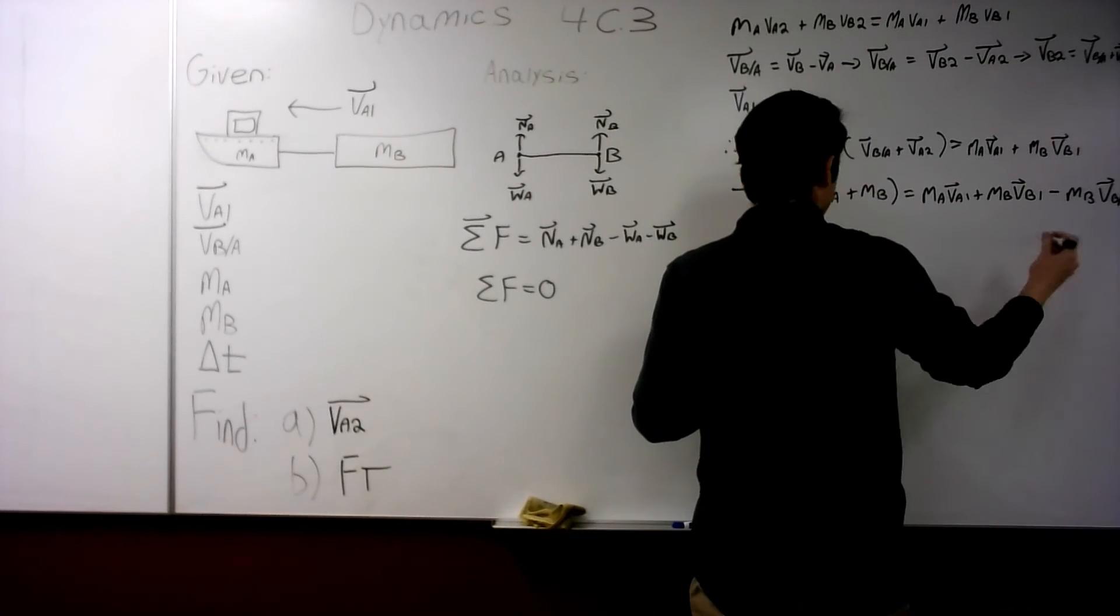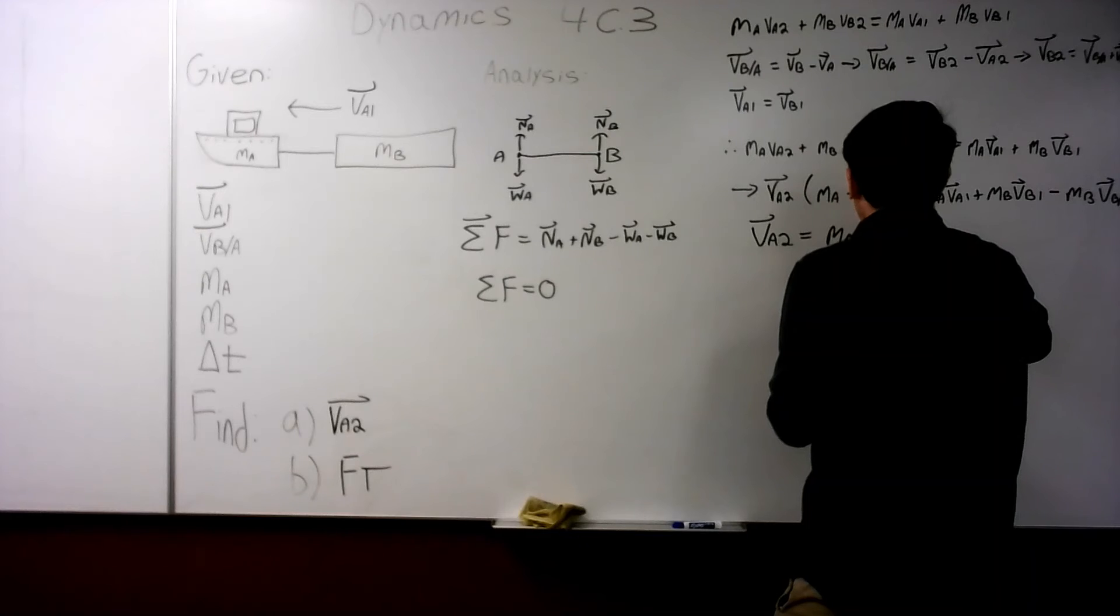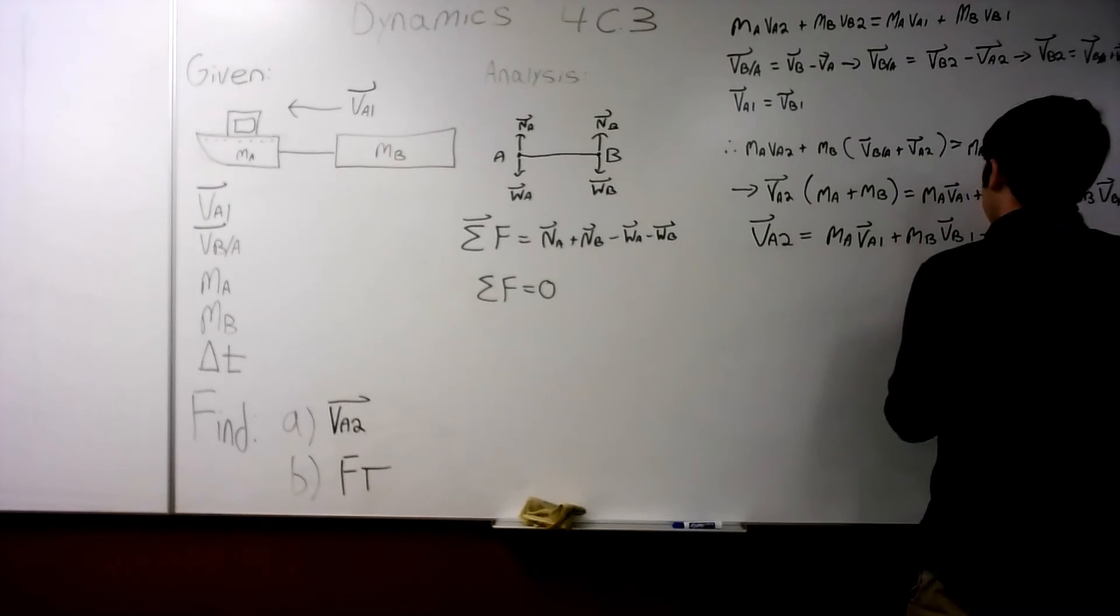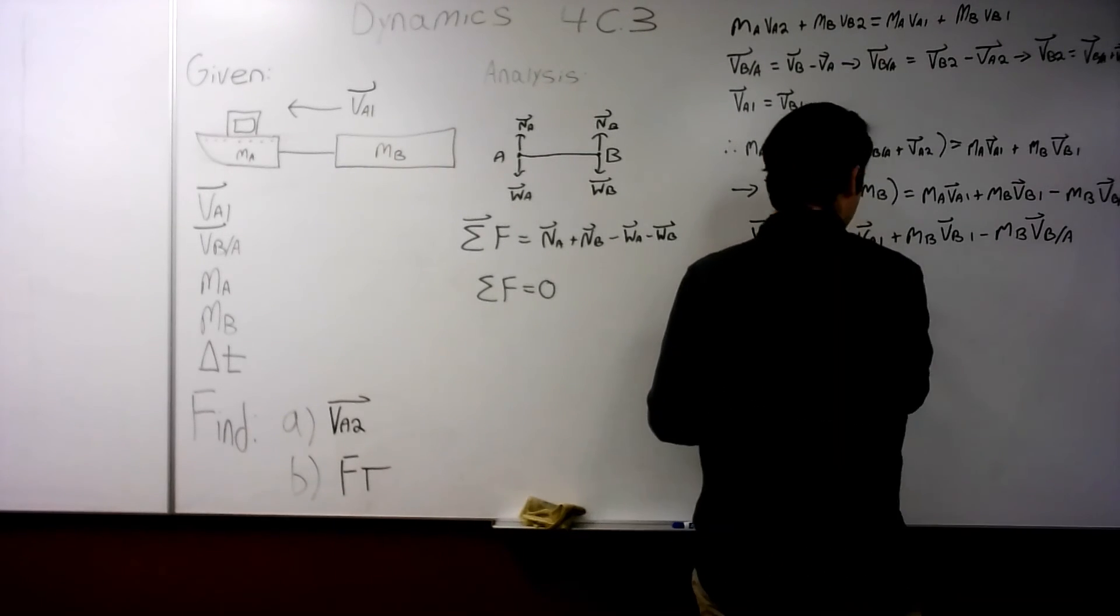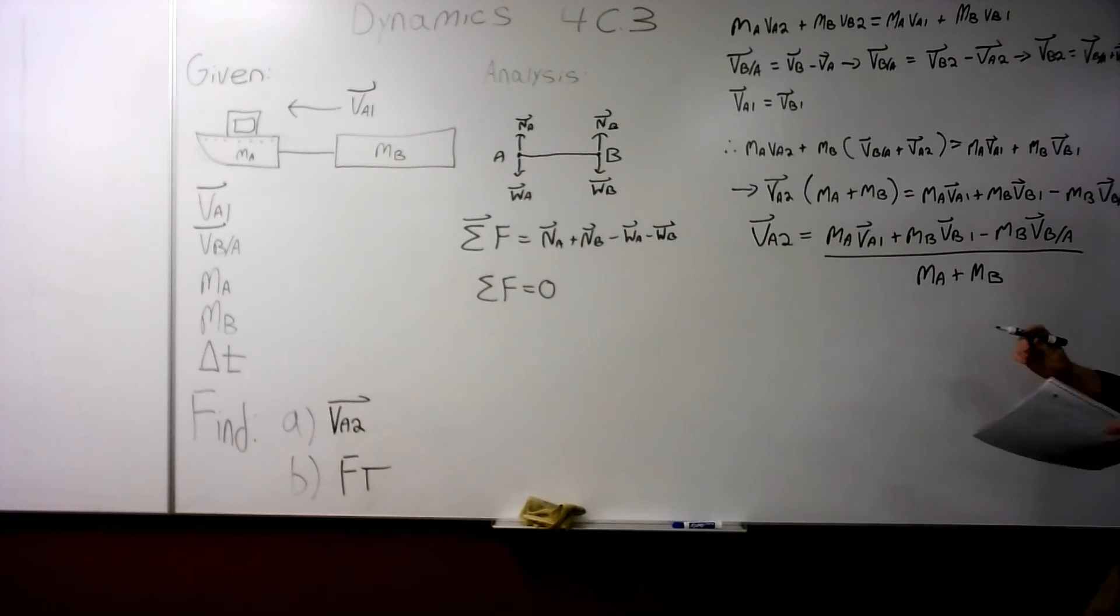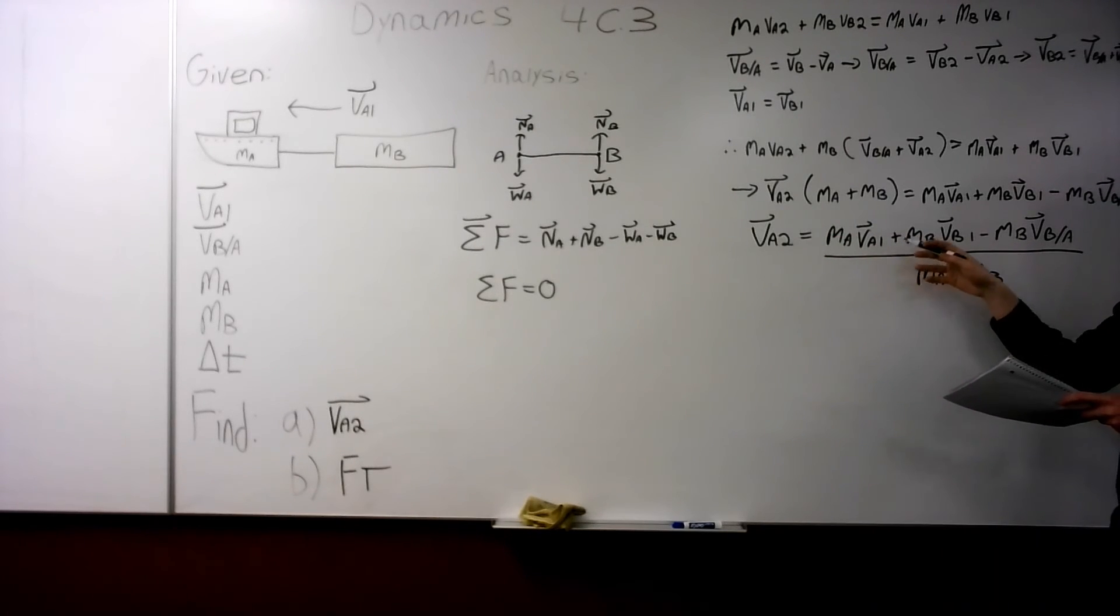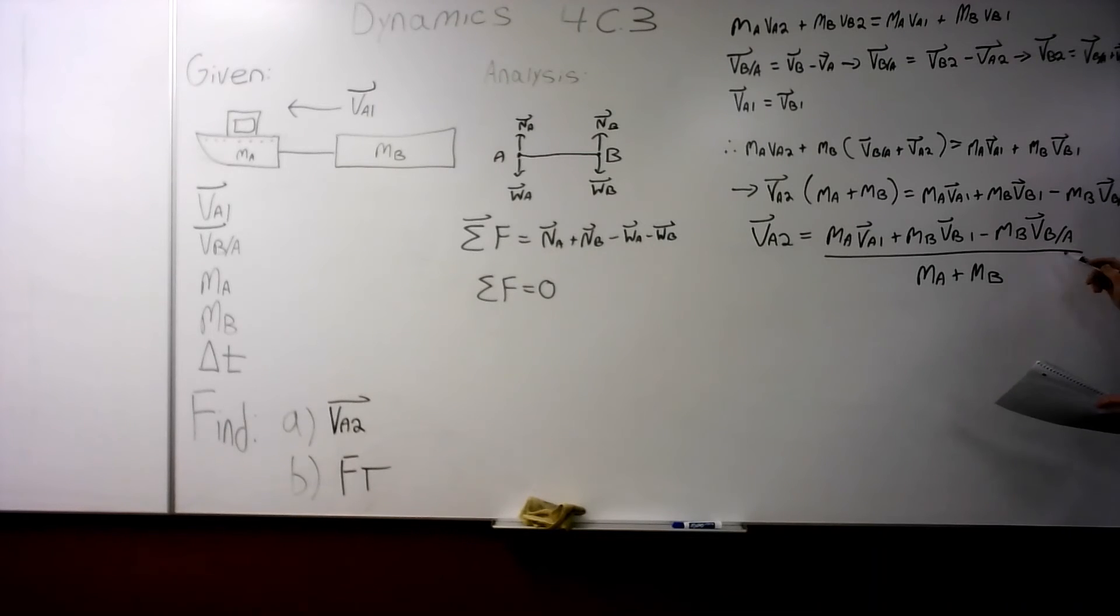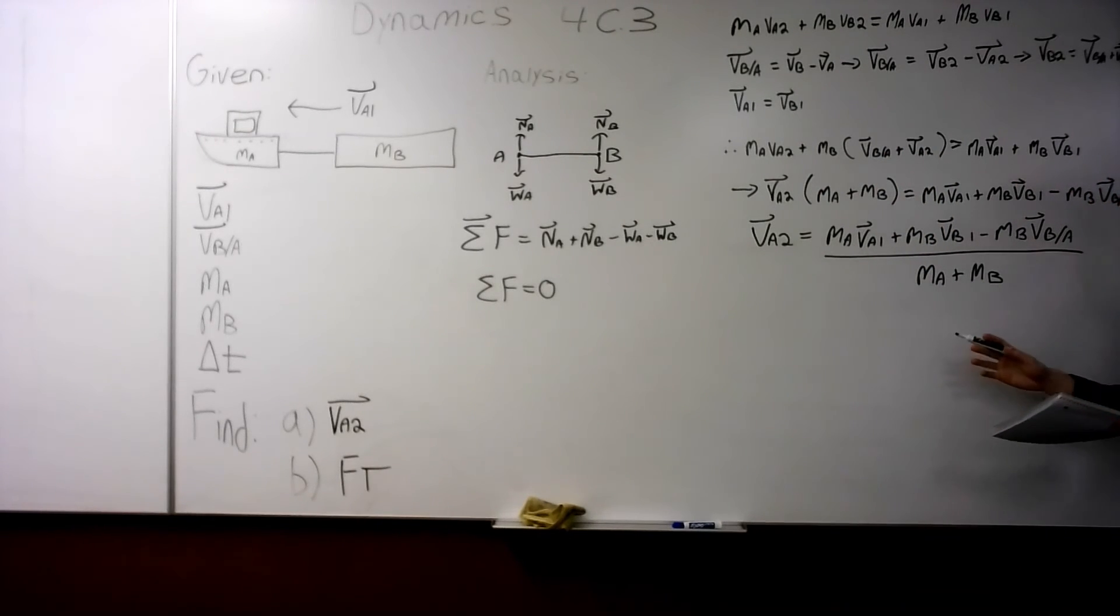And from here, we're just going to divide all of this to the other side. And VA2 is equal to MA VA1 plus MB VB1 minus MB VBA. And if we're looking back and checking our variables, VA2 is what we're solving for. We are given MA VA1, MB VB1 is not given, but is equal to VA1. We're given MB VBA and MA and MB. Therefore, based on our givens and our work, we have a completed solution for VA2.